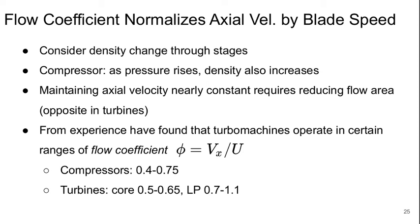From experience, it has been found that turbomachines operate effectively or efficiently in certain ranges of flow coefficient. The flow coefficient we define as φ, and it's just vx over the blade speed u. For compressors, it tends to be in the range of 0.4 to 0.75. For turbines, core turbines, maybe 0.5 to 0.65. Low pressure turbines, a little higher, 0.7 to 1.1.